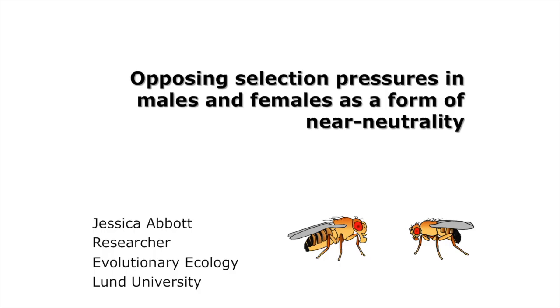Professor Ota already gave a nice description of how the nearly neutral theory can be applied to a bunch of different areas, and I'm going to talk about the specific thing that I'm interested in: selection on males and females, how that can differ, and how this can be considered a form of near neutrality.